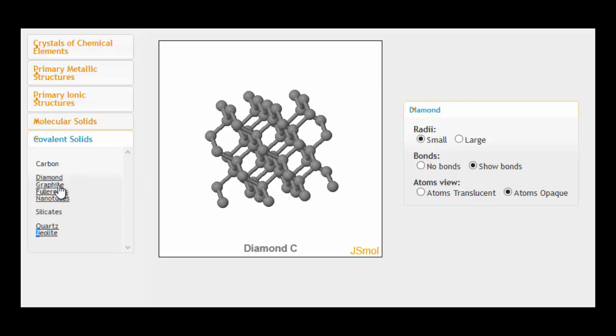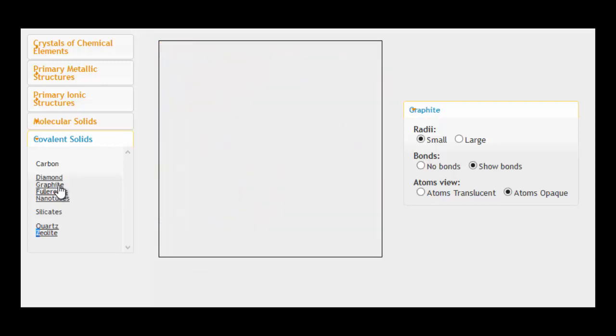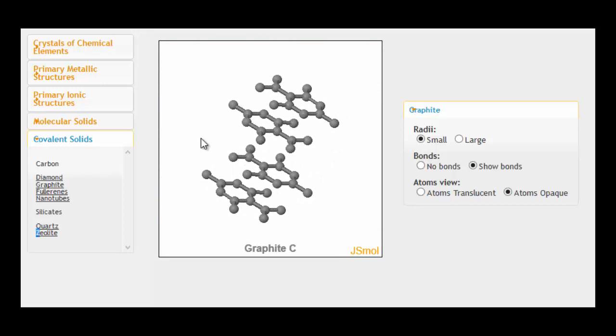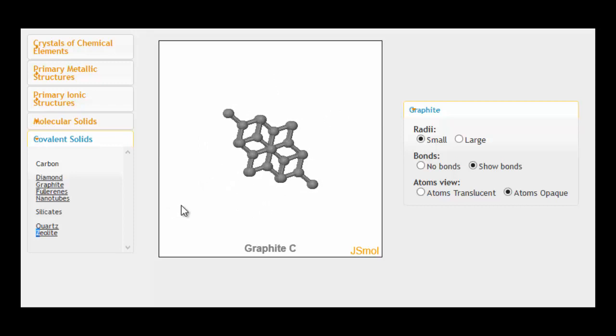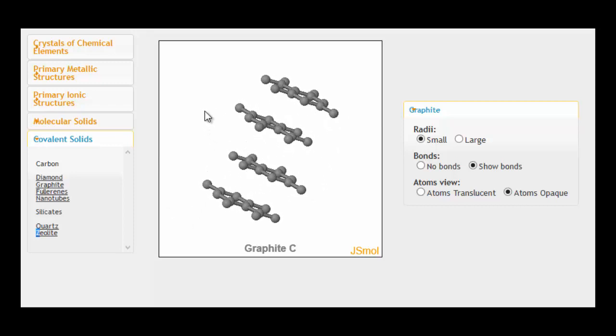We'd have a quick look at graphite as well. Here we go. So this shows four layers. Each layer, unfortunately, in this particular representation is only very small. It's not showing you very much of the layer. But you can see how they're effectively separate, the layers. The only thing that holds them together are those weak van der Waals forces.